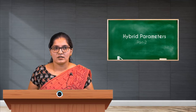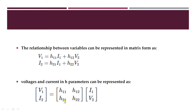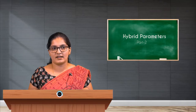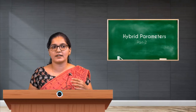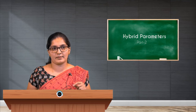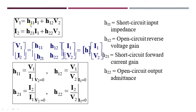This is how H parameter equations or relations can be represented in a matrix form. This 2×2 matrix represents H parameters, and all four parameters have got different dimensions, hence the name hybrid parameter. H11 represents short circuit input impedance with the dimension of resistance. H12 is the open circuit reverse voltage gain, H21 represents forward current gain, and H22 represents output admittance.